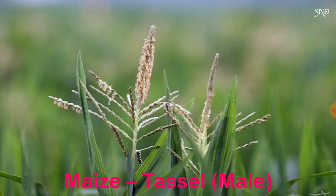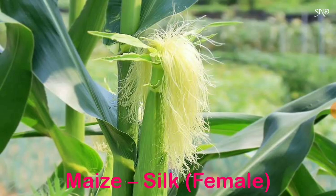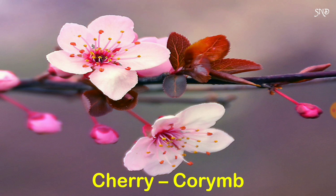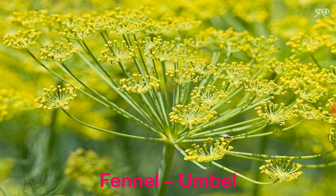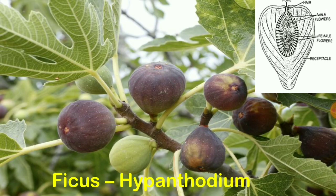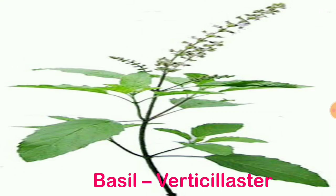In maize, the male inflorescence is called tassel and the female inflorescence is called silk. In cherry, it is corymb. Fennel's inflorescence is called umbel. In ficus, it is hypanthodium. In basil, it is verticillaster.